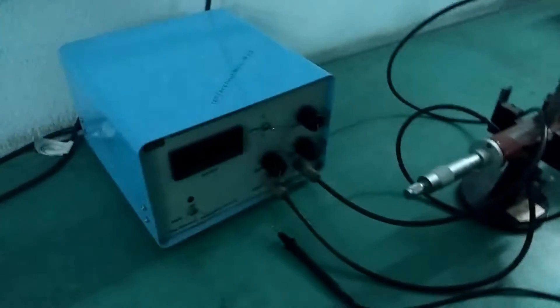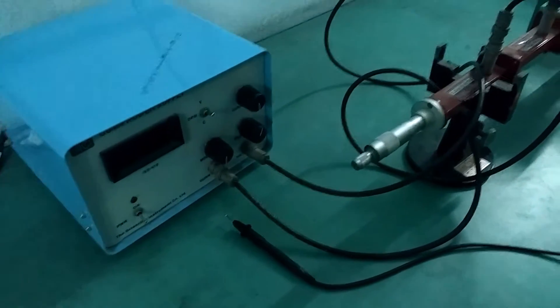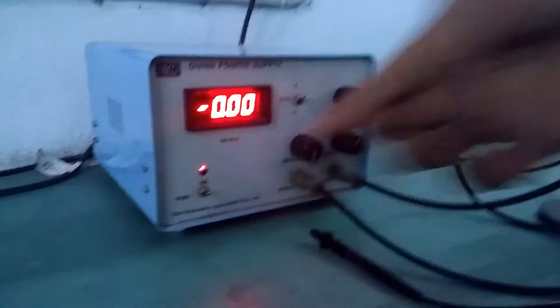So in this, we have to have three tables. The first one will be the normal VI characteristics of a Gunn diode. So for this we will just switch on the Gunn power supply.